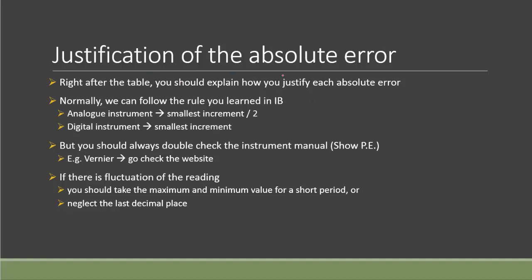Before you move on to process data, there's one more important thing—give the justification of the absolute error for each absolute error you mentioned. Normally you can follow the rule you learned in IB physics: if you use an analog instrument like a ruler, you do smallest increment divided by two for the absolute error. For digital, it's just the smallest increment.